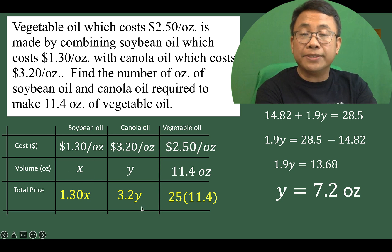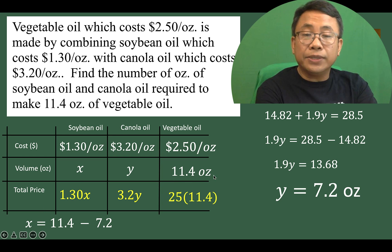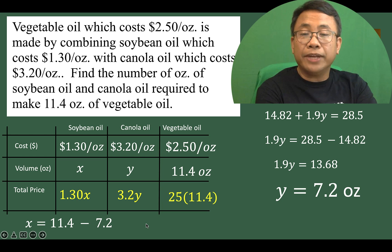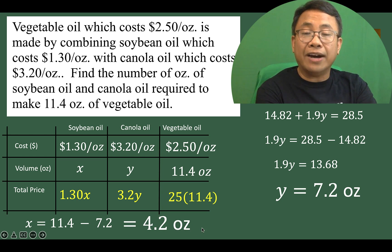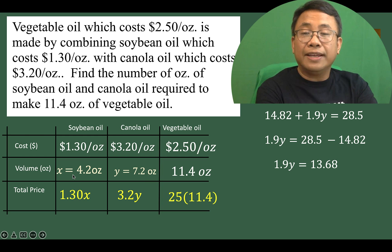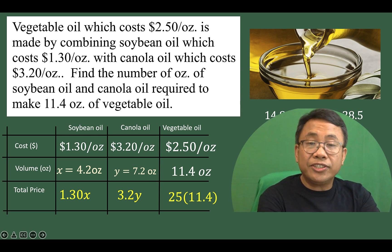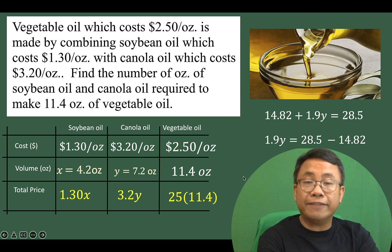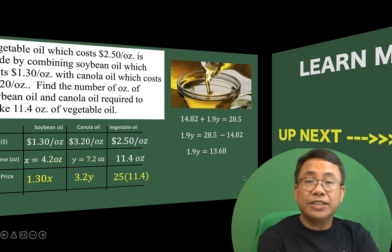We can now solve for the volume of soybean oil. Since soybean oil equals the total volume minus the volume of canola oil, the result is 4.2 ounces. So x is 4.2 ounces and y is 7.2 ounces. The main strategy here is to organize your given data in tables like this. Thank you very much.